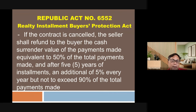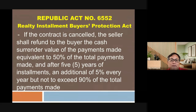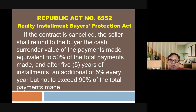The CSV is computed at 50 percent of the total payments made. After five years of installments, an additional five percent is added for every year, but not to exceed 90 percent of the total payments made. For example, if the buyer has paid for 12 years, that's seven years beyond five, so you add 35 percent, giving 85 percent total. If paying for 15 years, the maximum refund is still capped at 90 percent.